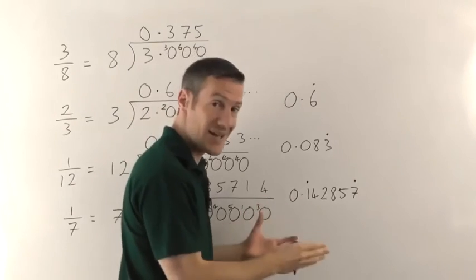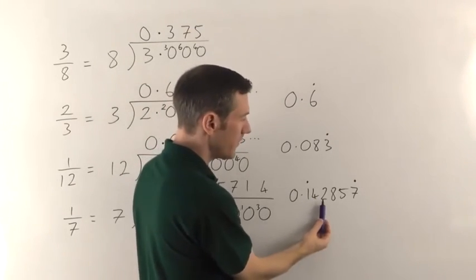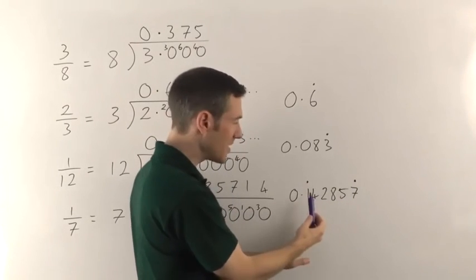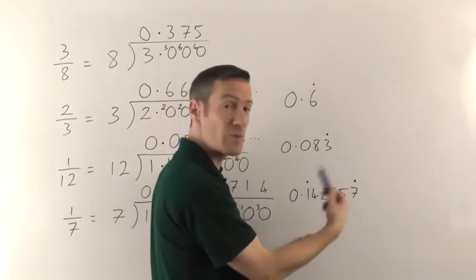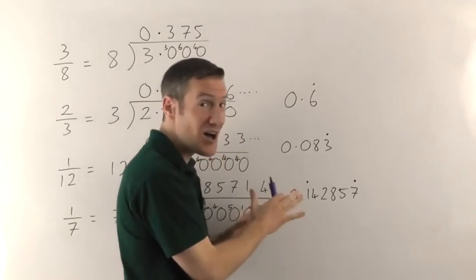So as a decimal, 1/7 is going to be 0.142857 with the dots above the 1 and the 7. And that means that the 142857 keeps repeating over and over forever. That's as hard as it's ever going to get.